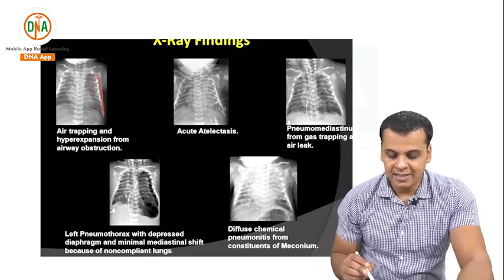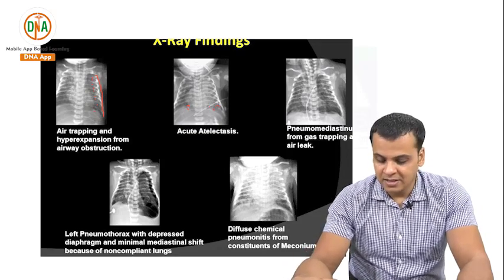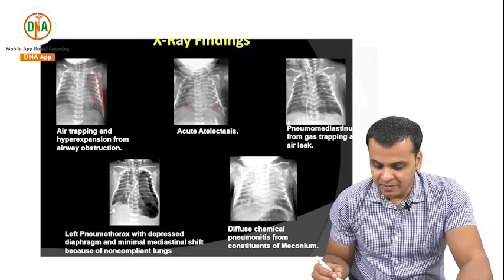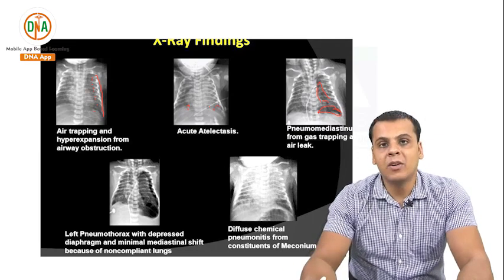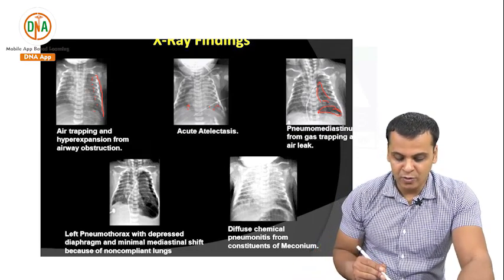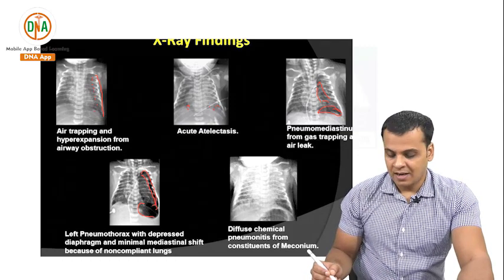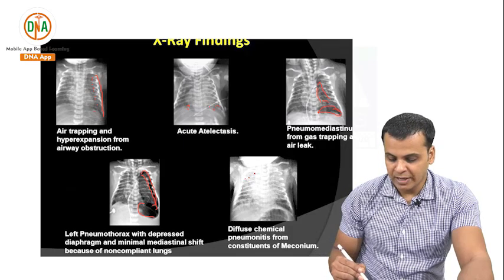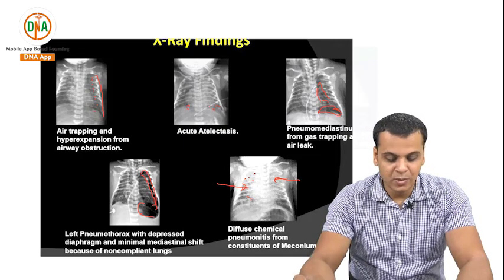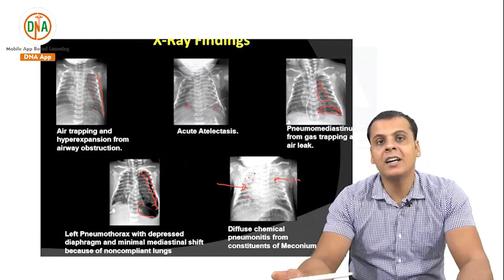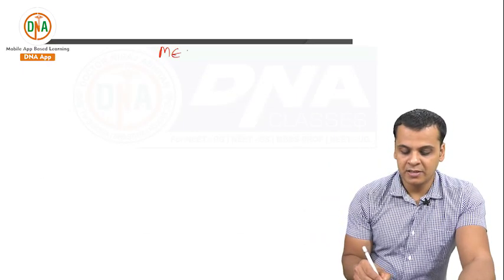The next X-ray shows atelectatic changes — collapse of the alveoli. There is also pneumomediastinum because of air leaks; appreciate the hyperlucency here. The pneumothorax is also clearly apparent with absent lung markings. In the next one, there is diffuse pneumonitic change. All these markers and pointers indicate that this is Meconium Aspiration Syndrome (MAS).